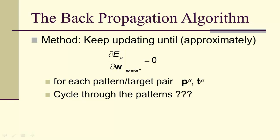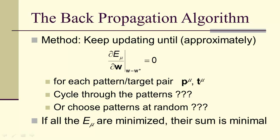And then the question, well, do we cycle through the patterns or do we choose patterns at random? So there are various ways to approach this problem. But the idea is that once we've minimized all the E sub mu, then their sum is minimal. And in particular, the P sub mu's will, when applied to the network, will produce the desired target value T sub mu.